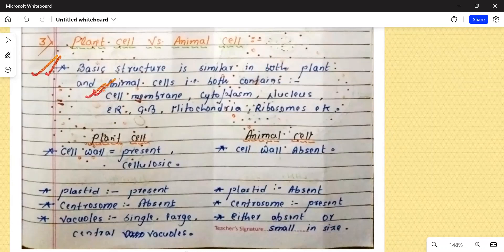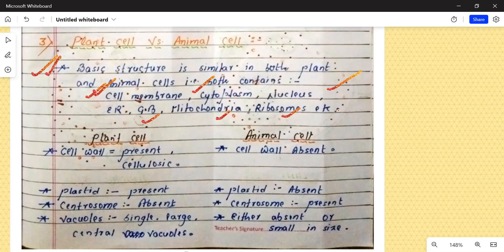For example, both contains cell membrane, cell membrane dono mein payi jati hai, cytoplasm dono mein payi jati hai, nucleus plant cell mein bhi hote hai, animal cell mein bhi hote hai, then Golgi body, mitochondria, ribosome. These are some of the common structures among both plant and animal cell.